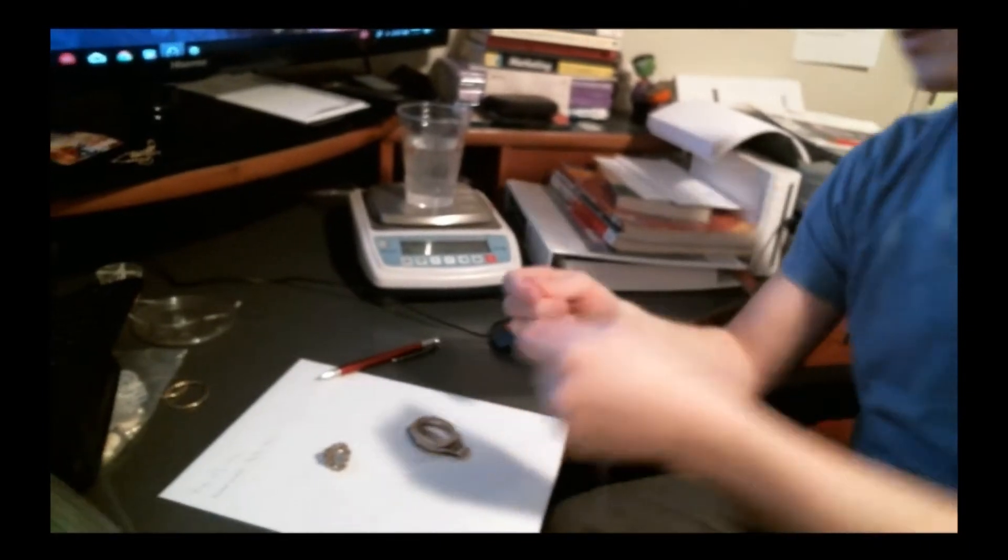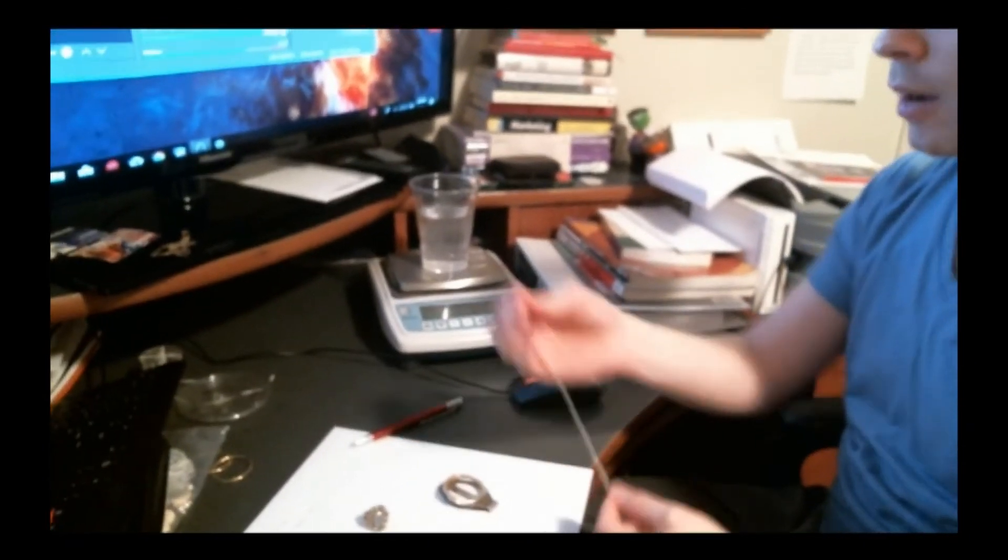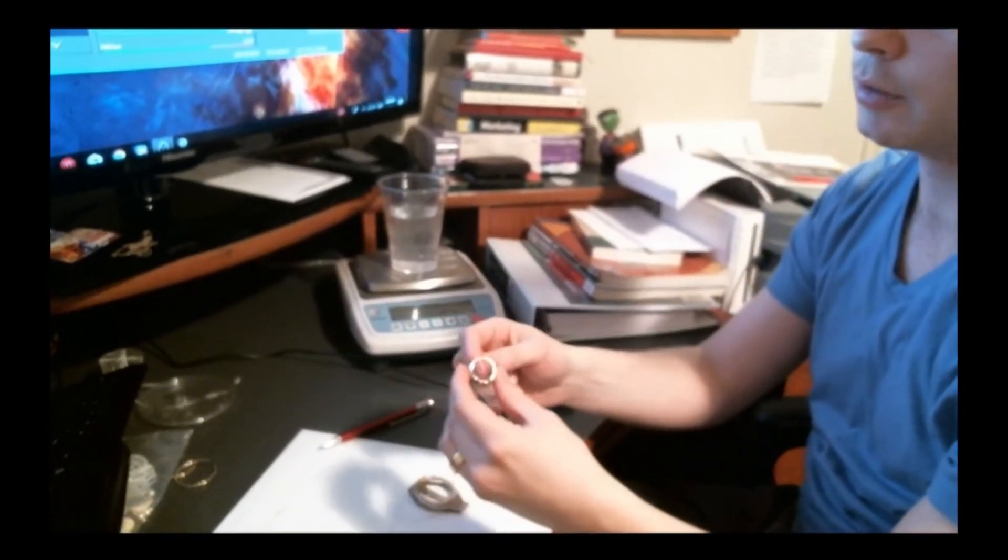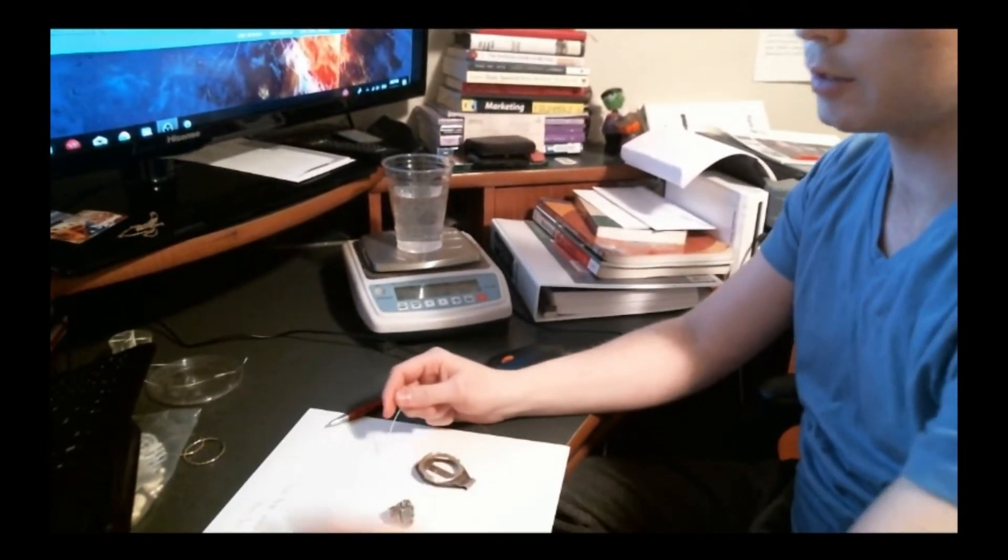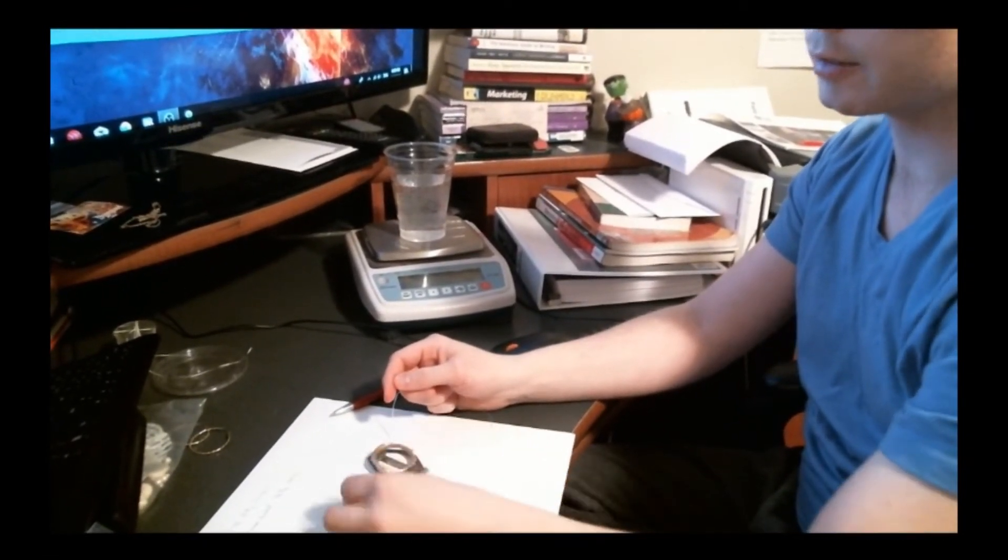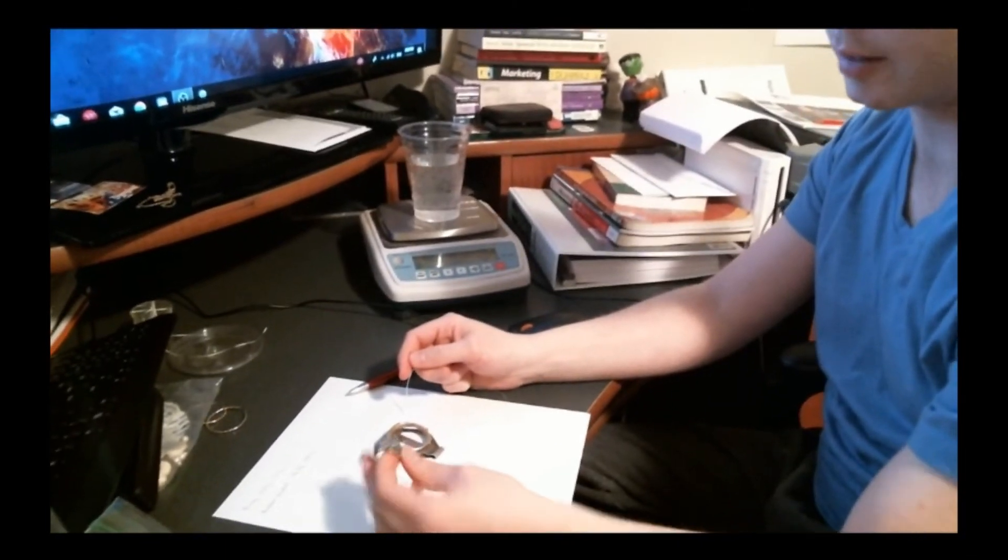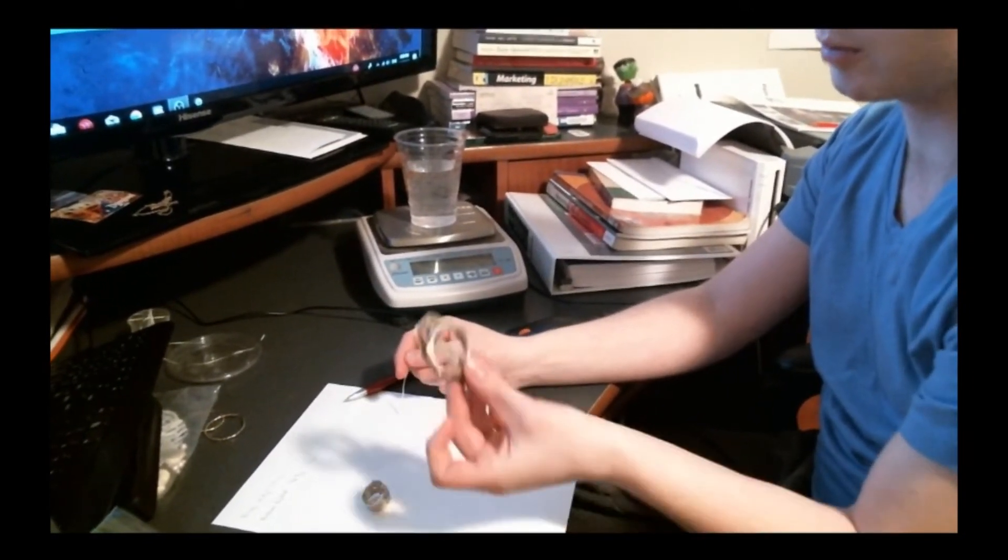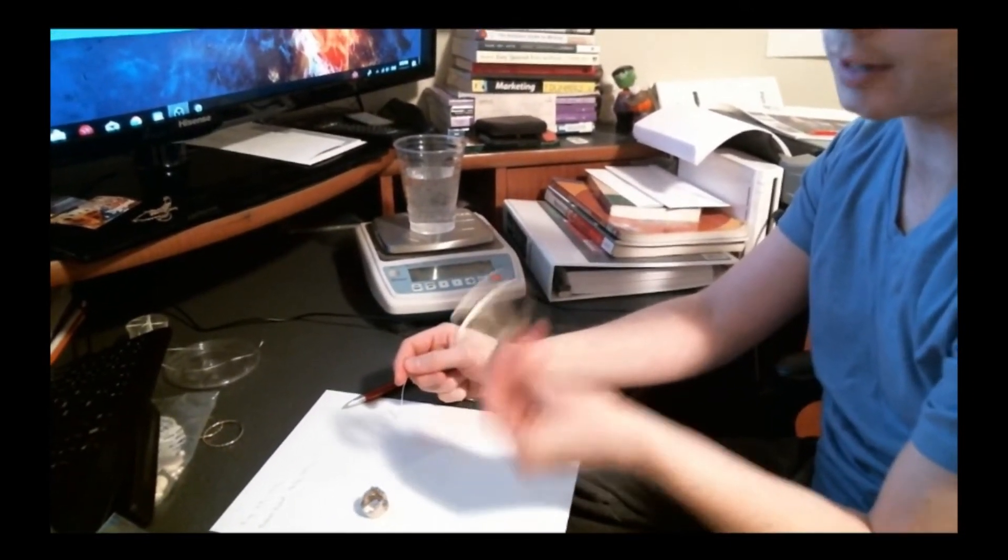First of all I've already weighed both objects. This ring weighed 11.8 grams and this broken belt buckle weighed 26.8 grams. I wrote it down on my paper so that I can keep track.